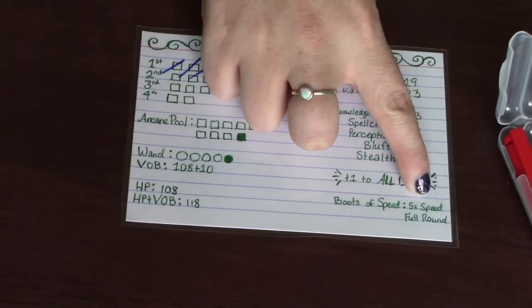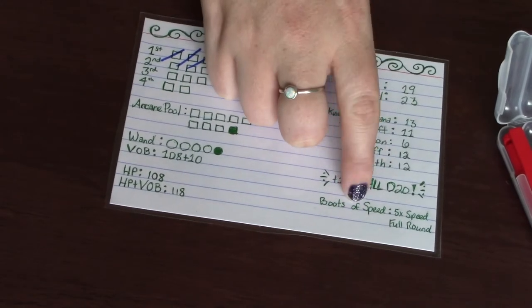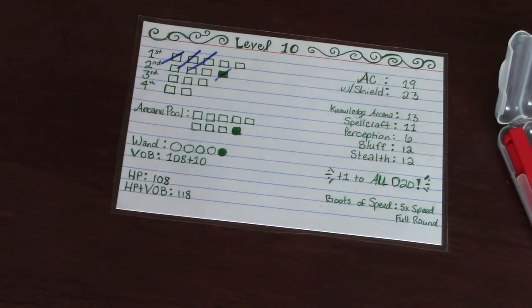These change a lot every time I level because I usually dump points in these. And, you know, new special items I haven't quite gotten the hang of yet. I just got these boots of speed and I keep forgetting I have them. So I wrote that on there.